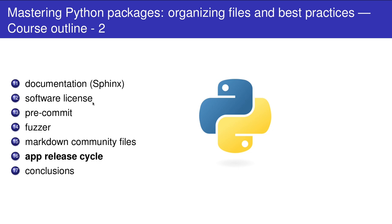We'll see several software licenses and which one to choose, and also the pre-commit environment — we'll set it up and see all the various important hooks. Also the fuzzer: we'll see what it is and why it is important, as it is connected to the testing part.